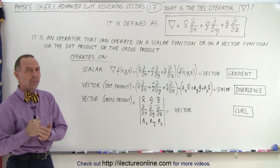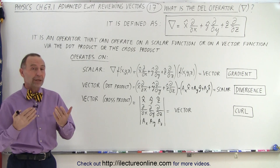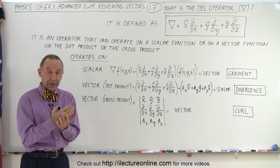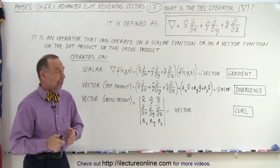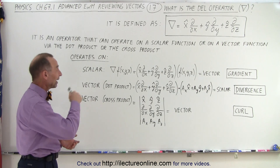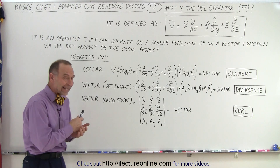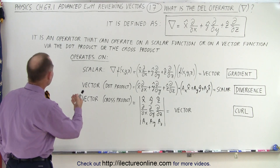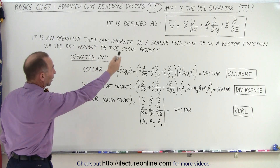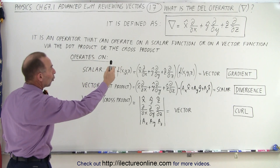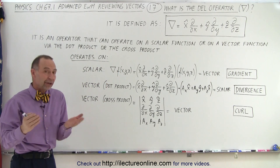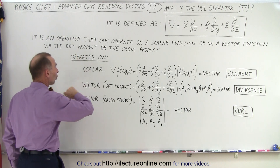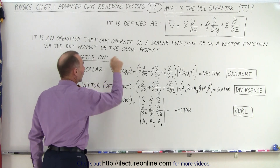So what is a DEL operator? Well, it is an operator that operates on things. A DEL operator can operate on both vectors and scalar functions. By definition, it is an operator that can operate on a scalar function or on a vector function, and on a vector function there are two options: it can do so via the dot product or via the cross product.